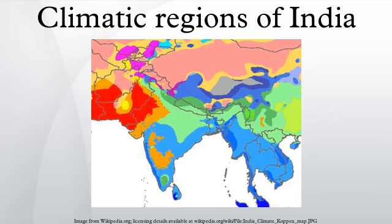Sub-tropical semi-arid climate: the region to the east of the tropical desert, running from Punjab and Haryana to Kathiawar, experiences this climate type. This is a transitional climate falling between tropical desert and humid sub-tropical, with temperatures which are less extreme than the desert climate. The annual rainfall is between 30 to 65 centimeters but is very unreliable and happens mostly during the summer monsoon season. Maximum temperatures during summer can rise to 40 degrees Celsius. The vegetation mostly comprises short coarse grass, and some crops like jowar and bajra are also cultivated.